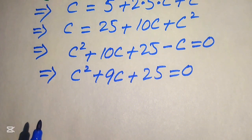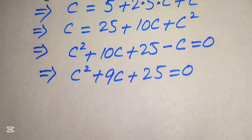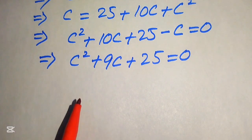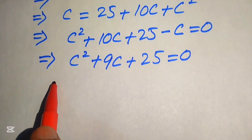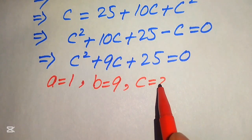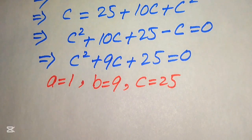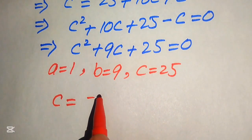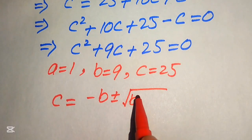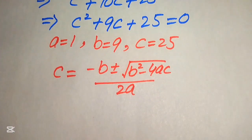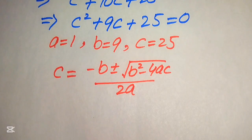This equation is quadratic in c. There are three methods to solve a quadratic equation: the first is the factorization method, the second is completing the square, and the third is applying the quadratic formula. Here I will use the quadratic formula. The coefficients of this equation are a equals to 1, b equals to 9, and c equals to 25. The quadratic formula is: c equals minus b plus or minus square root of b squared minus 4ac, all divided by 2a.